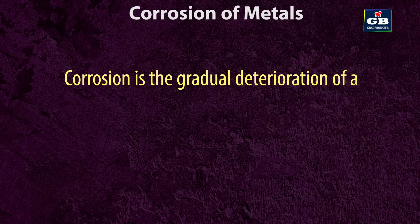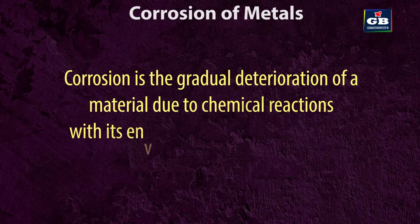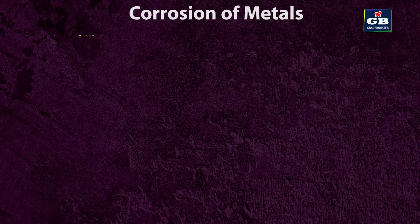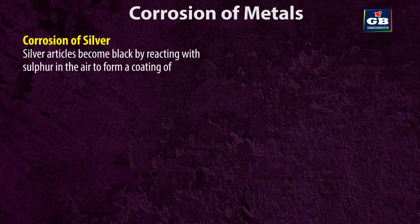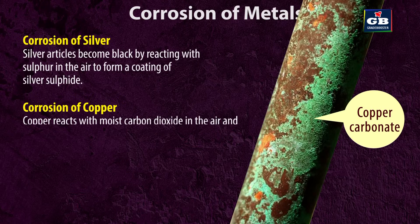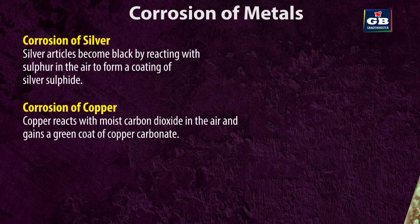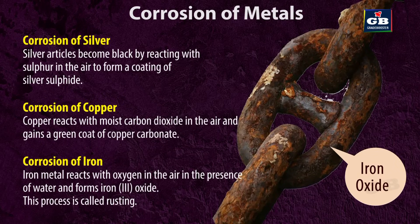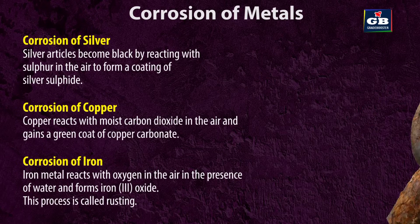Corrosion: Corrosion is the gradual deterioration of a material due to chemical reactions with its environment, mostly by oxidation. Silver articles become black by reacting with sulfur in the air to form silver sulfide. Copper reacts with moist carbon dioxide in the air and gains a green coat of copper carbonate. Iron metal reacts with oxygen in the presence of water to form iron oxide — this process is called rusting.